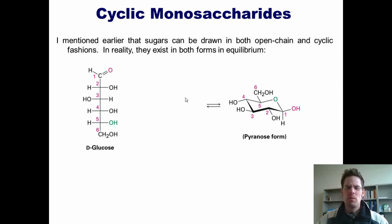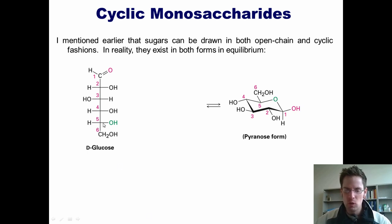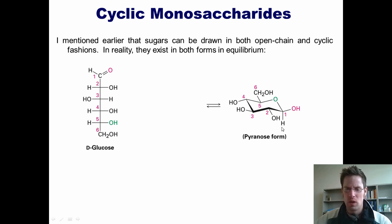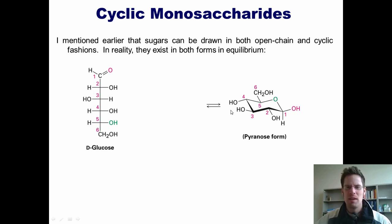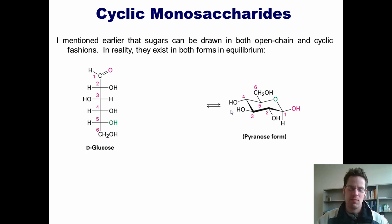When I was new to carbohydrate chemistry, this kind of freaked me out. I remember seeing the open chain form of glucose, and then in other places I would see the closed chain ring structure of glucose. I remember feeling very confused and thinking these are not the same molecule — how can they both be glucose? I felt frustrated because I don't really feel like my teachers explained this to me very well.